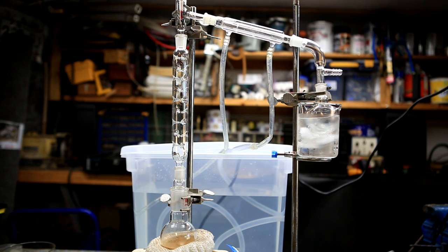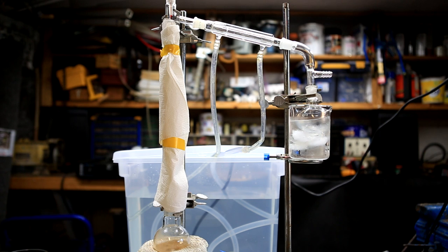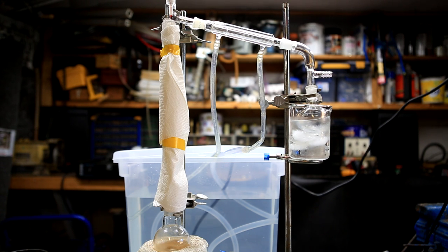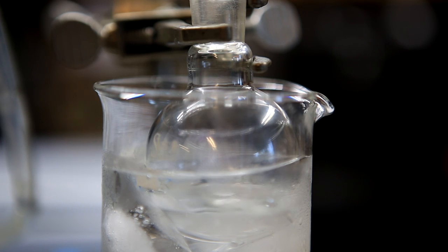It is stirred over the sieves for several minutes and then a fractional distillation is carried out. To make the distillation faster, I wrapped the column with some paper towel to insulate it. I collected the fraction that boiled between 48 and 53 degrees Celsius.